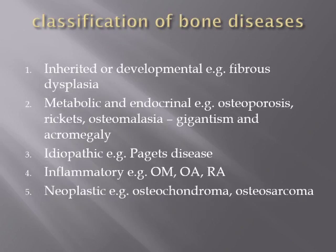Classification of bone diseases. Generally, we divide any disease into three main categories: idiopathic, which is a primary disease with no known cause; inflammatory etiology; and neoplastic etiology. Those are the three main points for any disease in any part of the body.